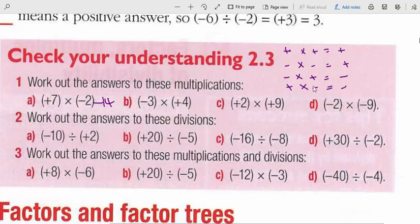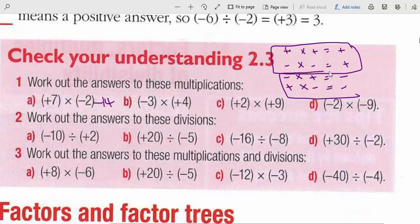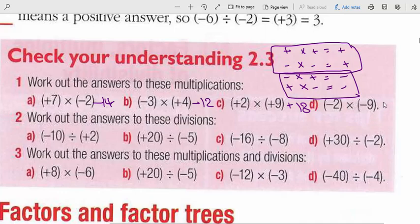To make this simpler: when you see the same signs, the result is positive; when you see different signs, the result is negative. For example, 3 times 4 is 12 and the answer is positive because they have the same sign. 2 times 9 is 18, positive, because they have the same sign.